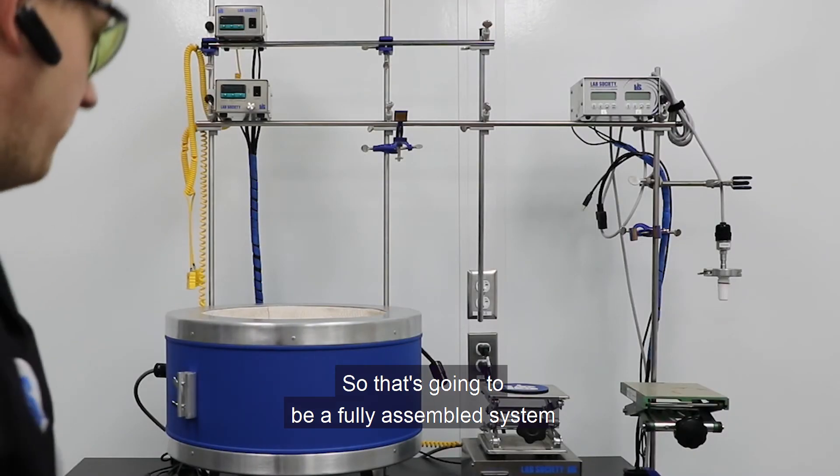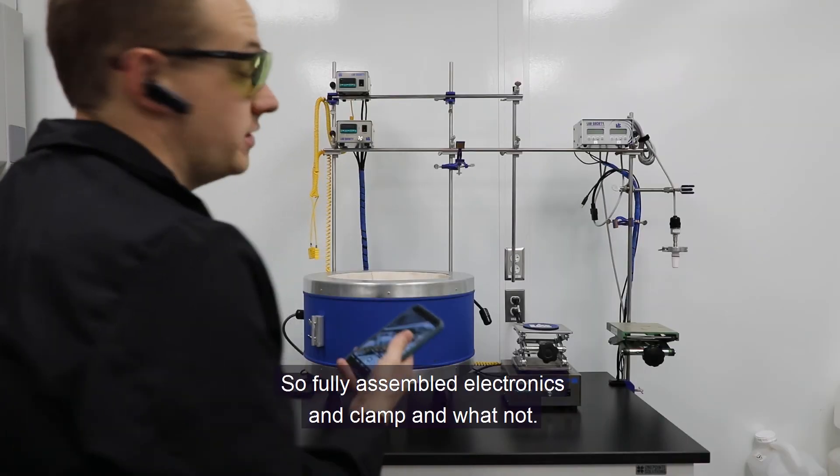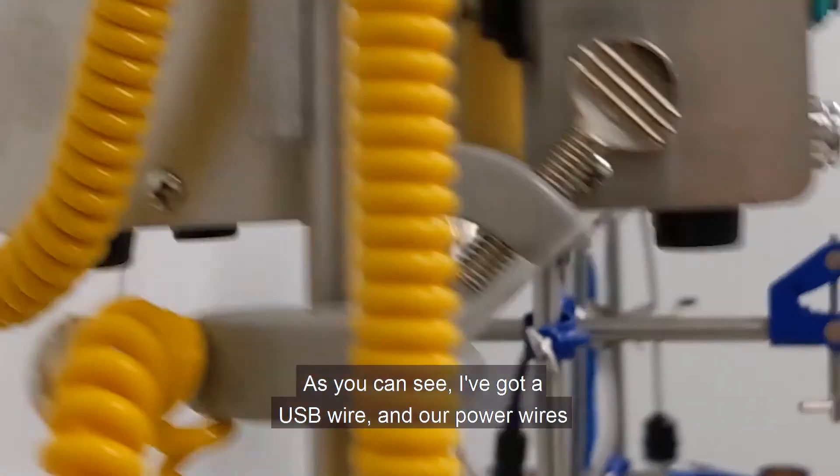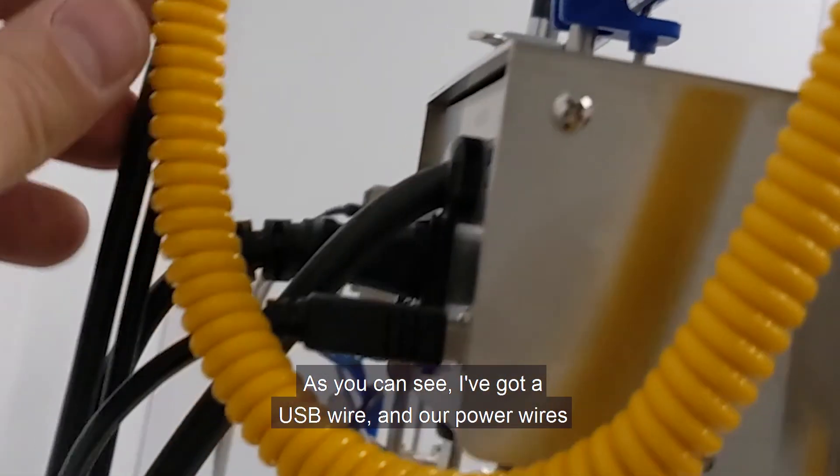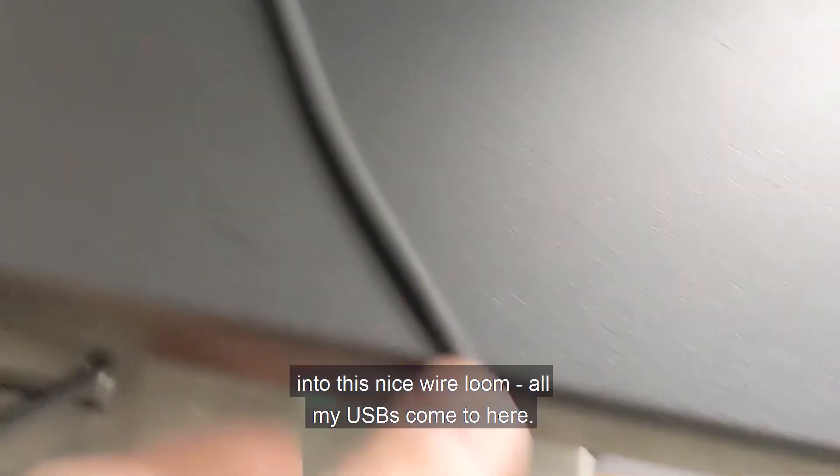All right, so that's going to be a fully assembled system with all electronics only, of course. So fully assembled electronics and clamps and whatnot. So as you can see, I've got my USB wires and my power wires coming up with this nice wire loom. All my USBs come to here.